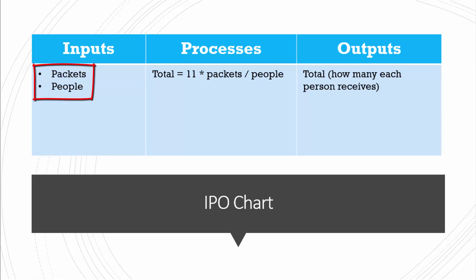The outputs is pretty much how many Tim Tams each person will receive. And how do you get to the output from the input? You need to do a simple mathematical formula which is all about timesing 11 by the number of packets that you have and then dividing it by how many people that you have.